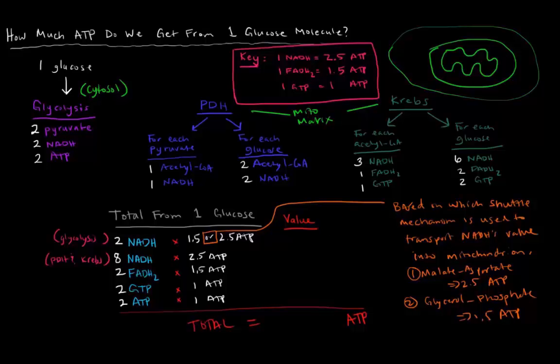But, let's just do the calculation for now. So, 2 times 1.5 would be 3, 2 times 2.5 would be 5. So, that would be the 3 or 5 ATP from those NADH's there. This 8 times 2.5, that'll actually be 20. These two FADH2's, each one's worth 1.5, so that's 3 ATP.